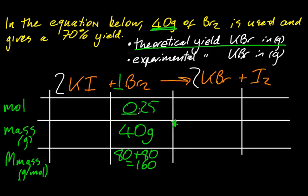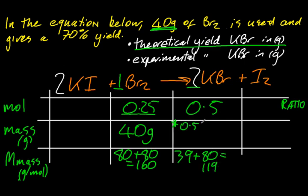So 1 is to 0.25 as 2 is to 0.5. That's the ratio line, top line. And mass is moles times molar mass. So I'm looking at 59.5 grams. That's my theoretical yield in a perfect world of potassium bromide.